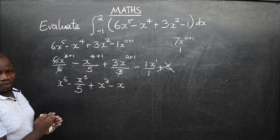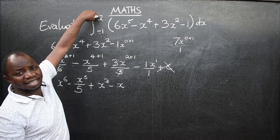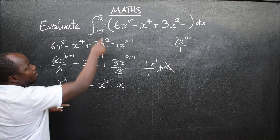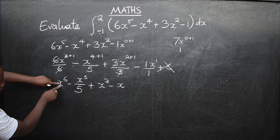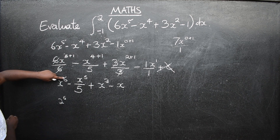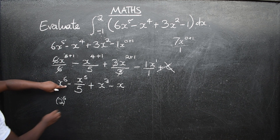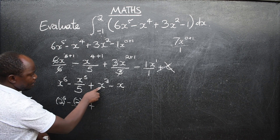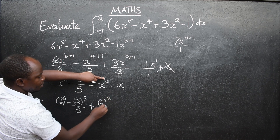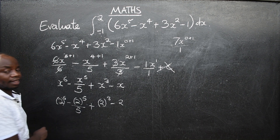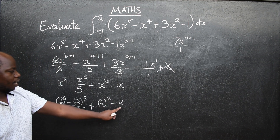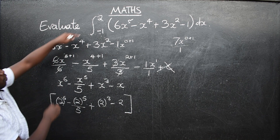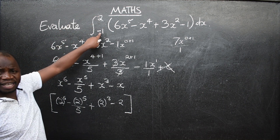Now that we have integrated, we substitute the limits. Start with the upper limit — substitute 2 wherever there is x, placing values in brackets: 2 to the power 6, minus 2 to the power 5 over 5, plus 2 to the power 3, minus 2. Put these in square brackets.